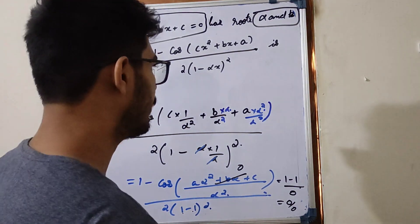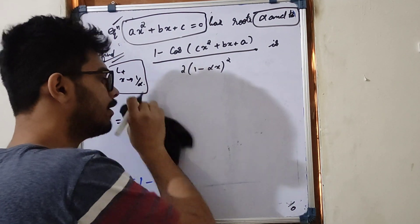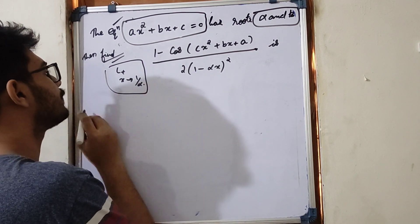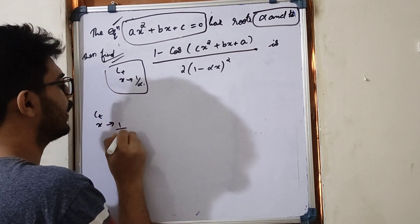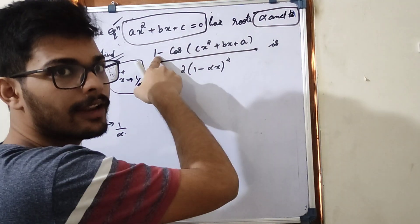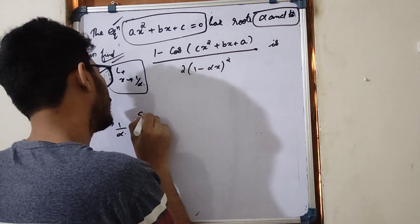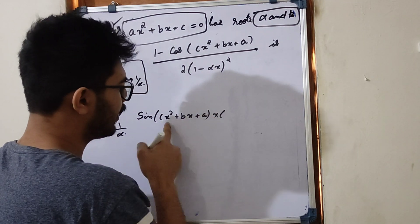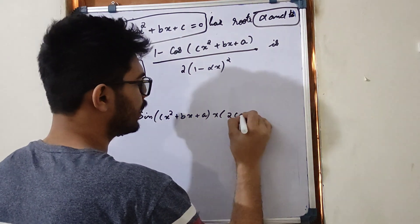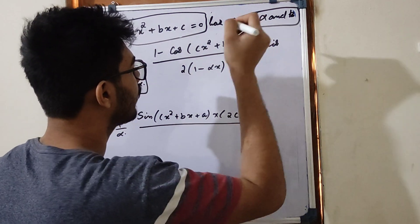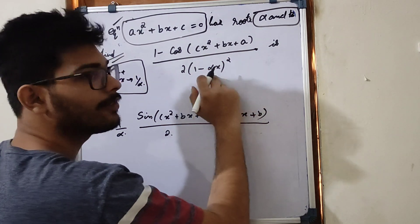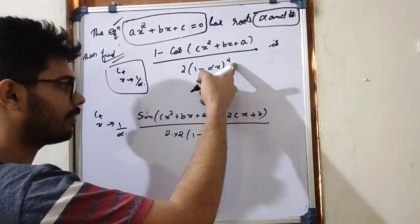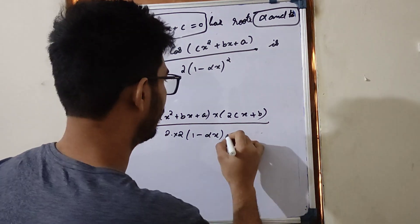It's a 0 by 0 form, so we apply L'Hôpital's rule. The limit x tends to 1/alpha. We differentiate the numerator: derivative of 1 minus cos(cx² plus bx plus a) gives sin(cx² plus bx plus a) times (2cx plus b) by chain rule. The denominator: 2 into (1 minus alpha·x), differentiated using x^n form gives 2 into (1 minus alpha·x)^(2-1) times minus alpha.